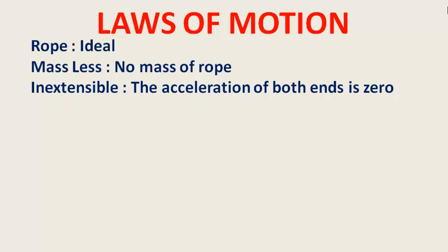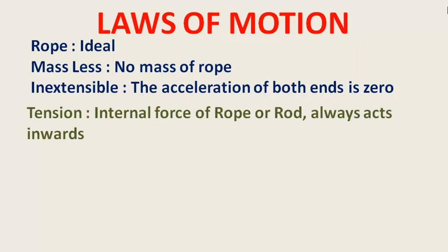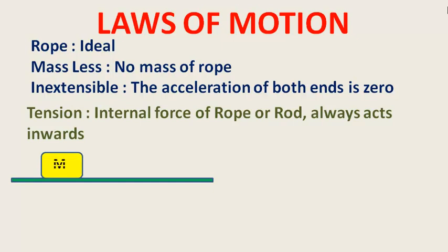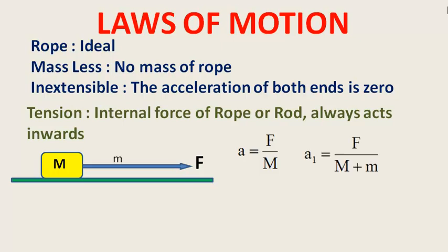Tension क्या होता है? हर rope या rod में internal force होती है। अगर आपने और मैंने किसी rope को खींचा हुआ है — अगर mass के पास से rope काटेंगे तो body उस तरफ जाएगी। शुरुआत में acceleration = F/M (massless rope मानकर)। लेकिन अगर rope को M mass दे दिया तो acceleration = F/(M + m) होगी — इसलिए ideal case में small m को zero लेते हैं।